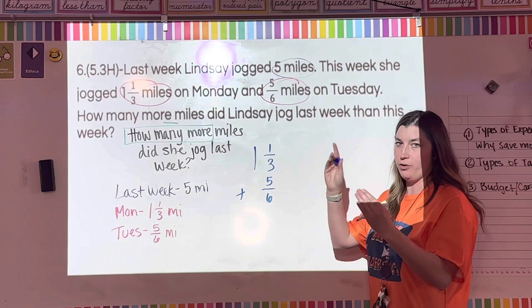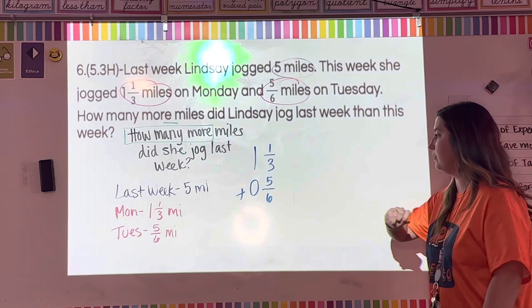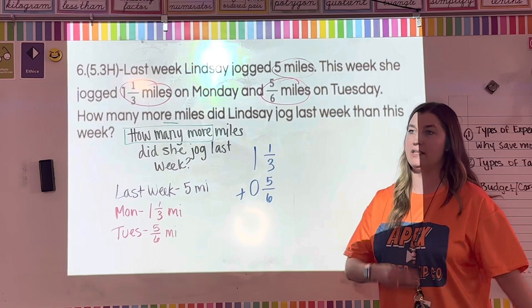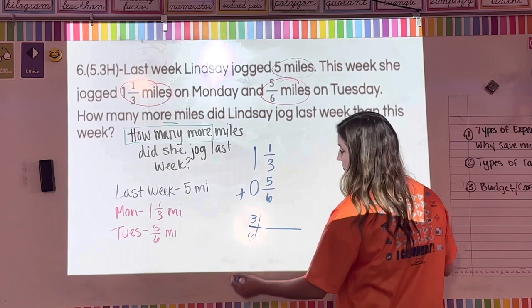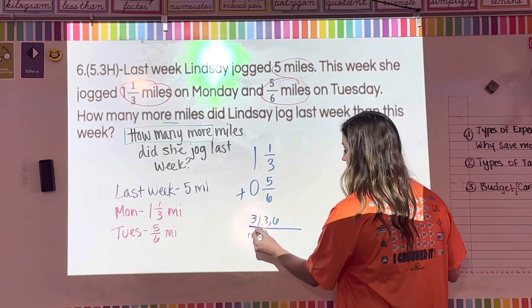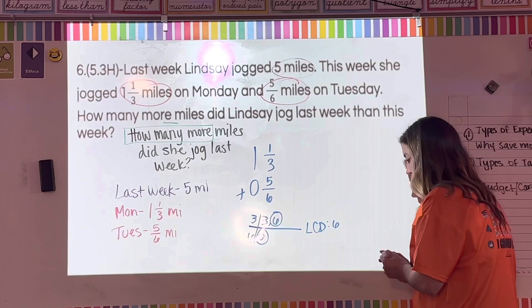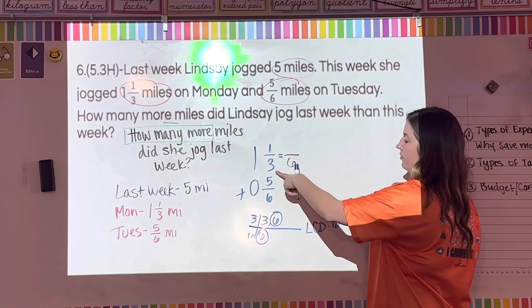I'll put a zero as a placeholder for the whole number on the second fraction. The denominators are different — three and six — so I need the least common denominator, which is six. Converting one-third: three times two equals six, so one times two equals two. The fraction becomes two-sixths.